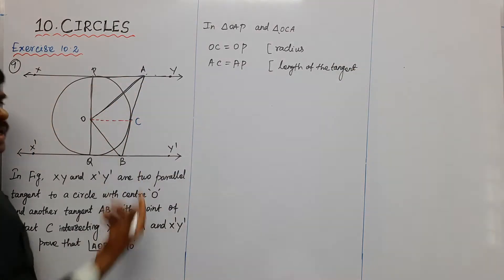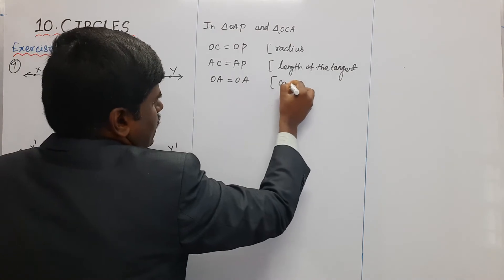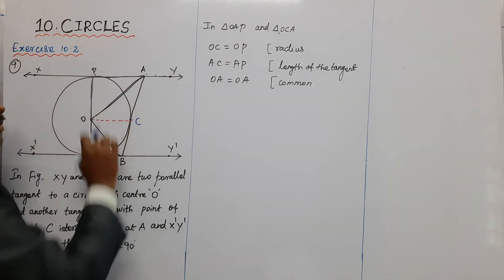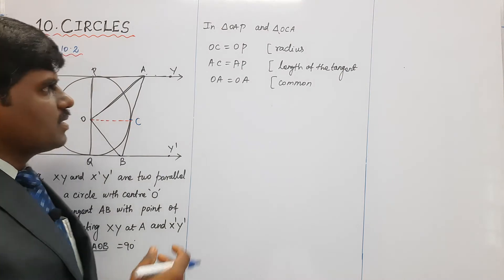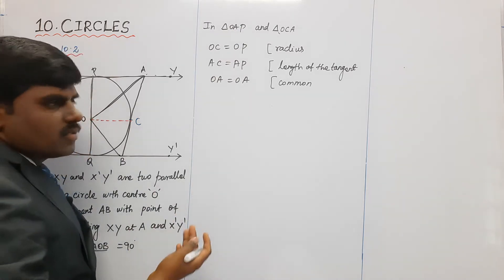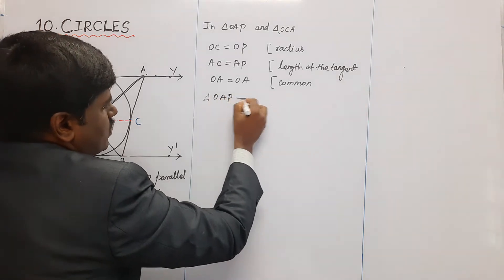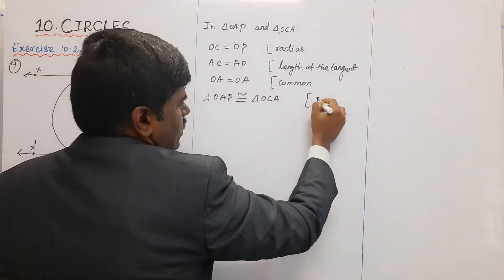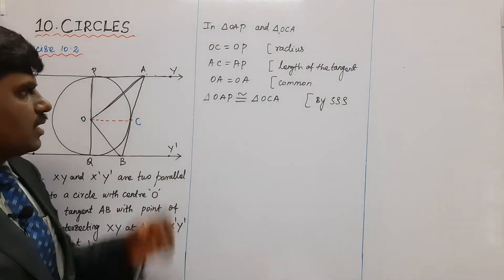Next, OA is common to both triangles OAB and OCA. So the corresponding sides are equal: OC = OB, AC = AB, and OA = OA. Therefore, triangle OAB is congruent to triangle OCA by the SSS — Side, Side, Side — criterion.